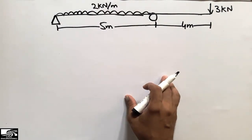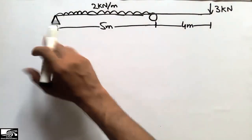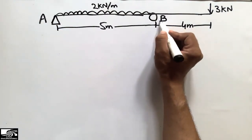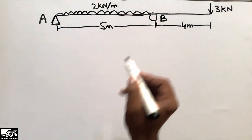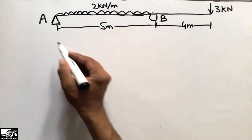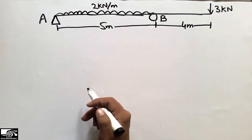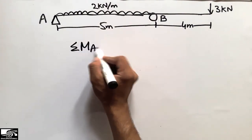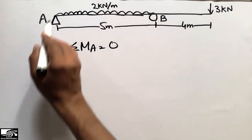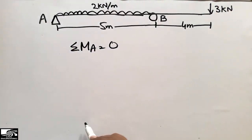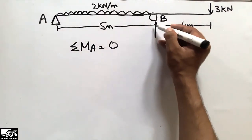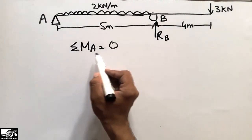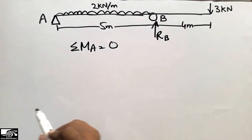To find the shear force and bending moment diagram, we first have to find the support reactions. Let's call this point A and this point B. To find the support reactions, we take the moment at one point equal to zero — so we take the summation of moments at point A equal to zero. Let's suppose the reaction at B is acting upward as RB.